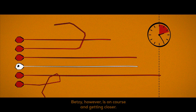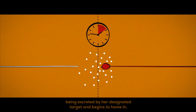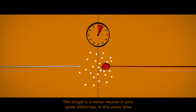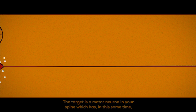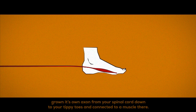Betsy however is on course and is getting closer. Her growth cone detects the specific mix of signalling proteins being excreted by her designated target and begins to home in. The target is a motor neuron in your spine which has, in this same time, grown its own axon from your spinal cord down to your tippy toes and connected to a muscle there.